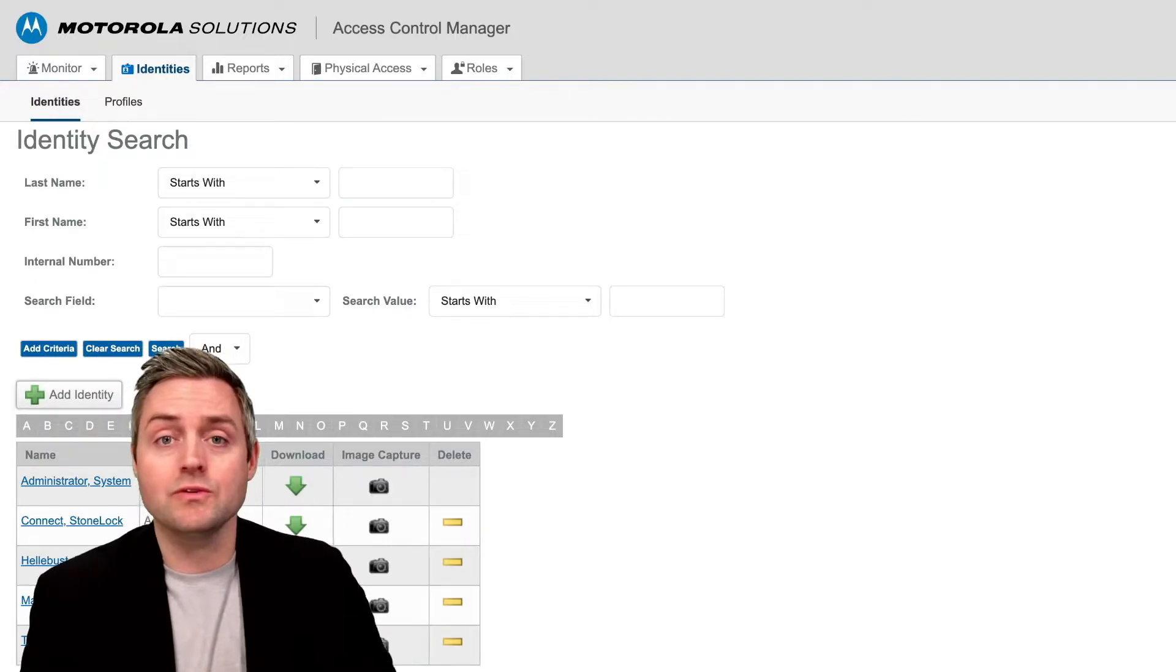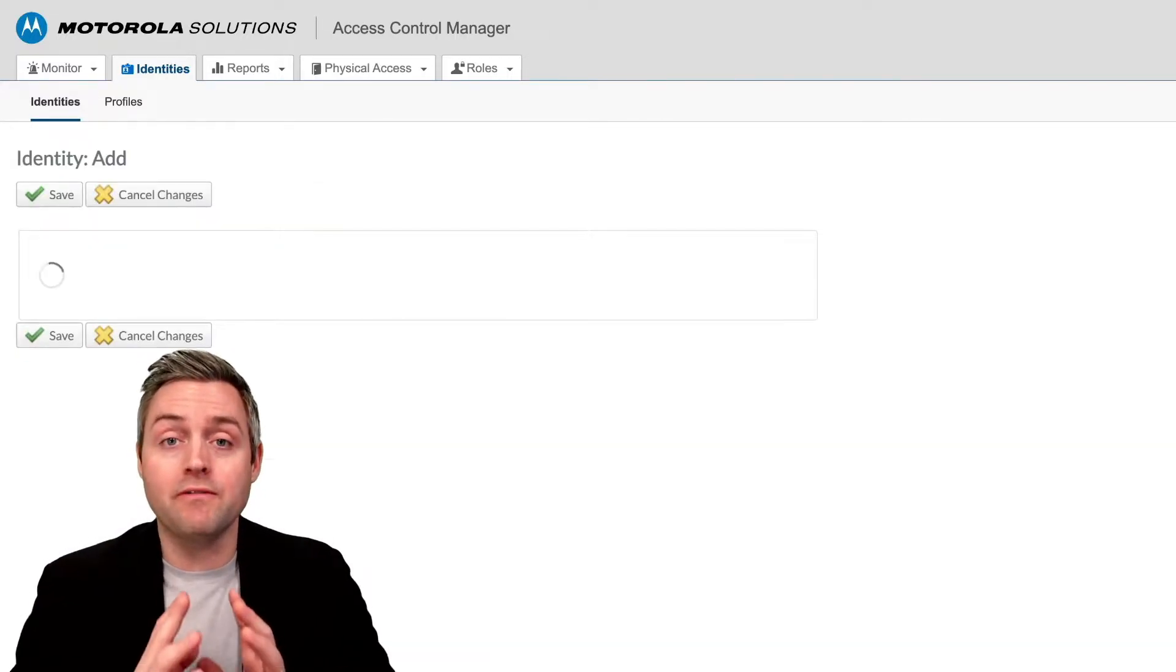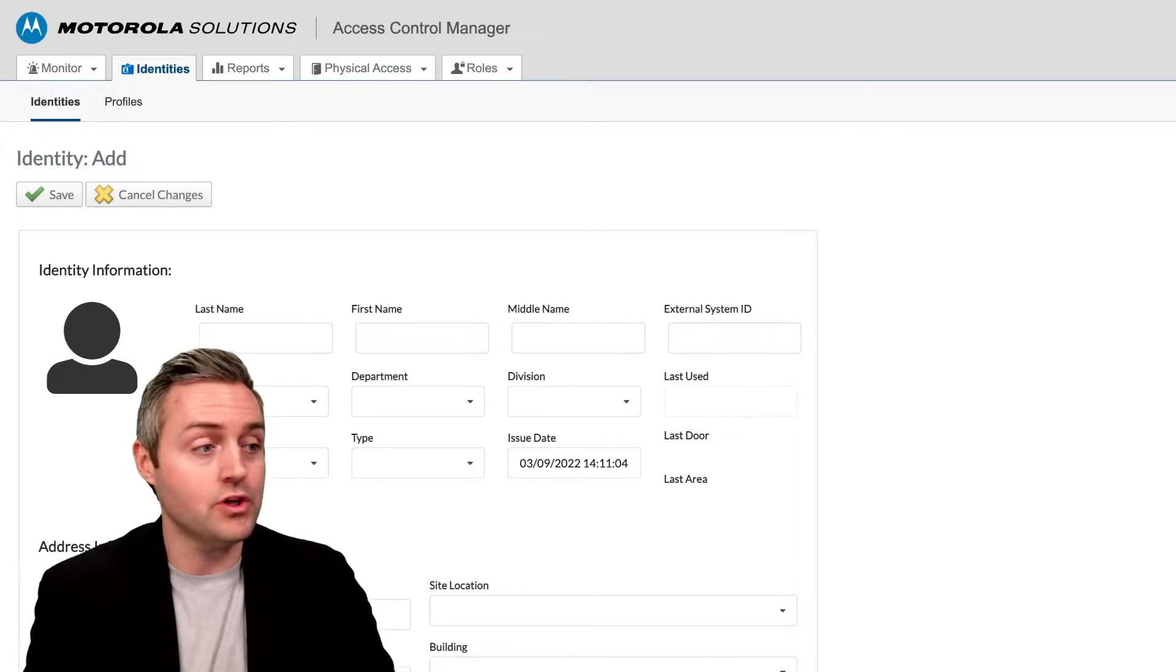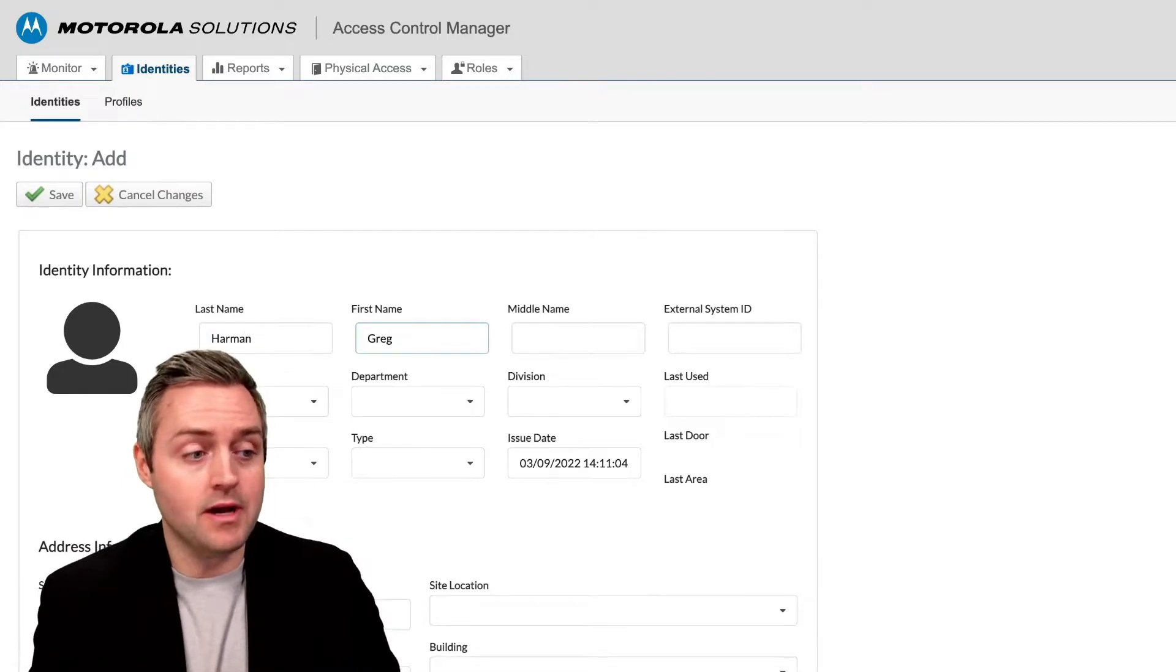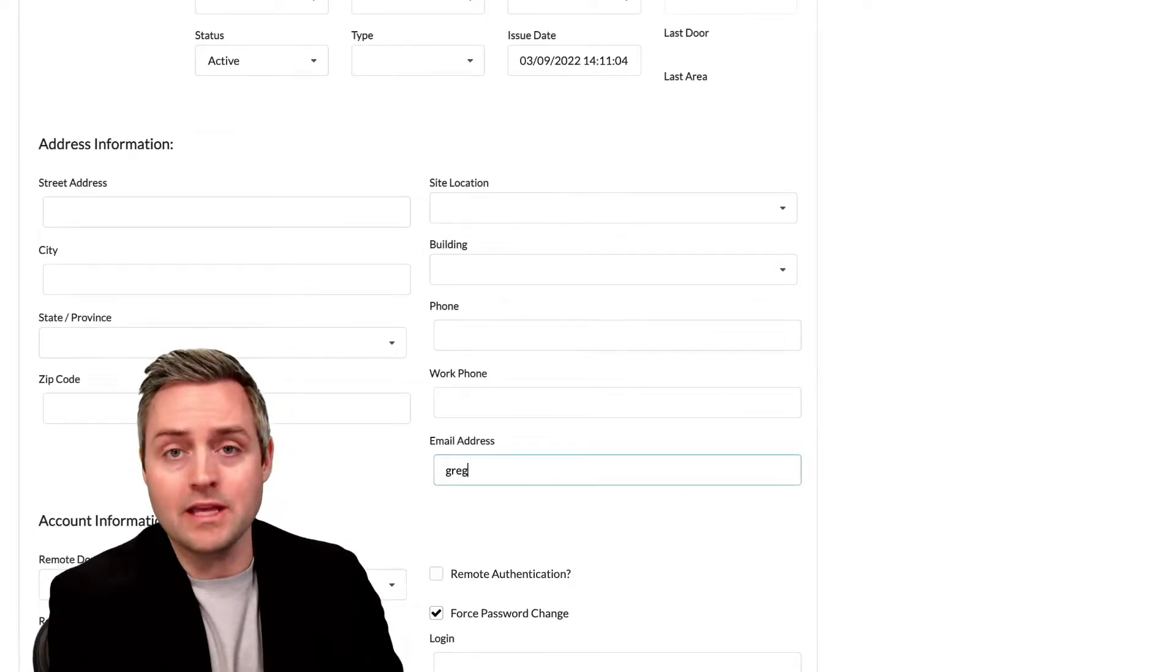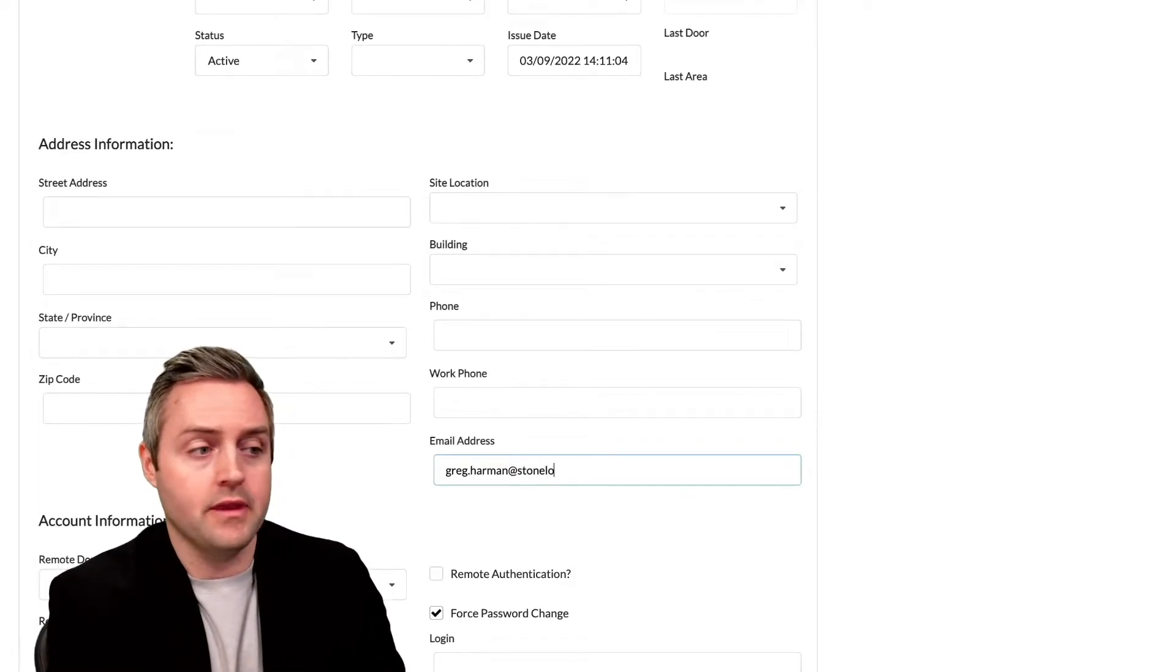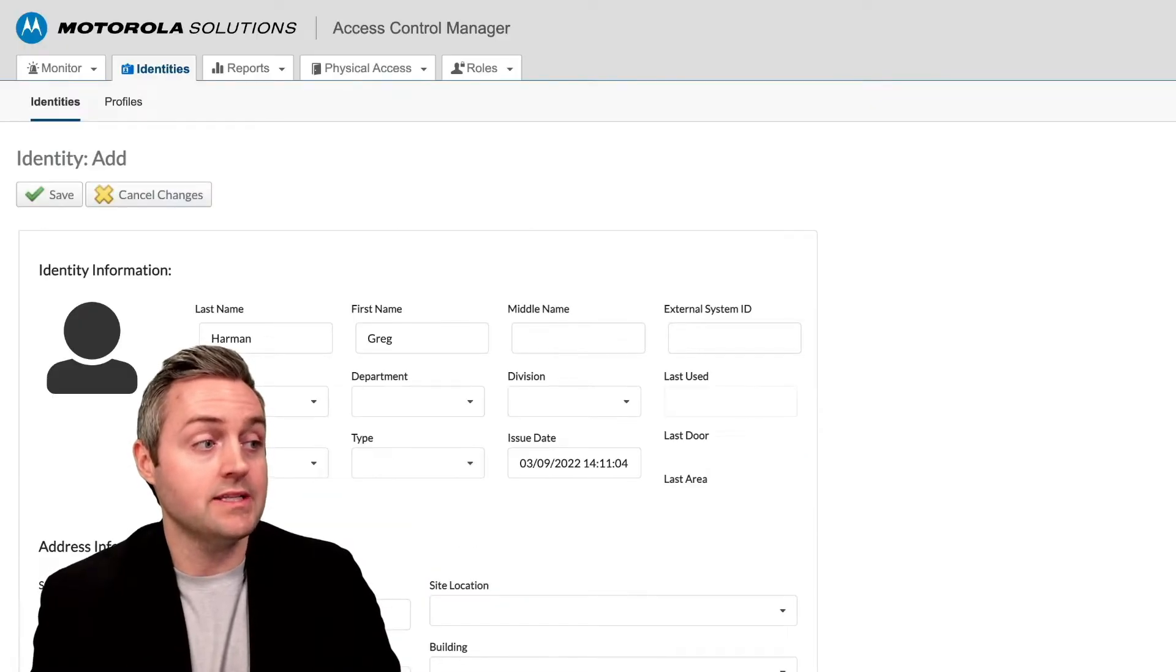So the first thing I'm going to do is click add identity, and I'm going to follow the exact same process I would to create any other card holder inside of Avigilon. So I'm going to enter my name, scroll down here, and this is optional. I'm actually going to enter my email address, scroll up and hit save.